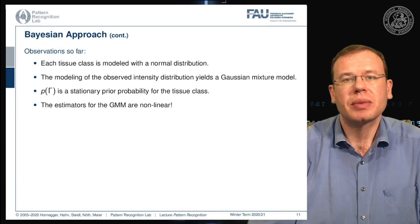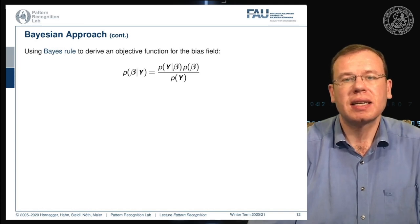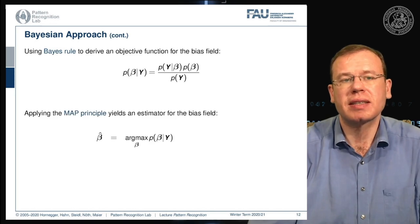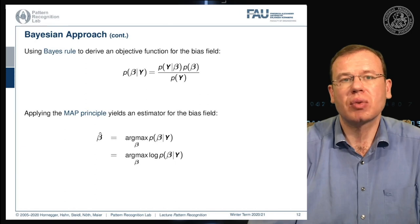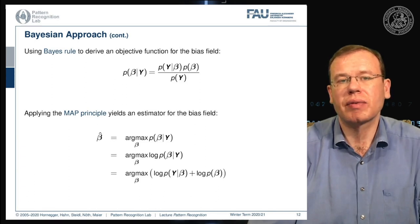We use a Bayesian approach to derive an objective function for the bias field. Using Bayes' rule, the probability of the bias field given observations is decomposed into a maximum a posteriori estimator. This is transformed into a log-likelihood function, and after applying Bayes' rule and the logarithm, we discard p(y) as irrelevant for maximization. We end up with the log conditional probability plus the log prior of β.